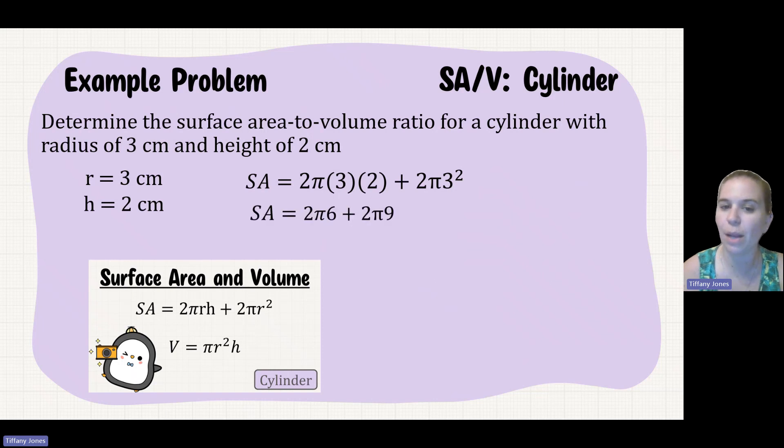And so what we'll do is we say OK, well, 2 times 3 is 6, and 3 squared is 9. So 2 times 6 is 12, 2 times 9 is 18. 12 plus 18 is 30. And don't forget to bring that π along for the ride.